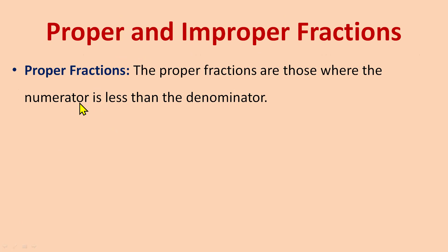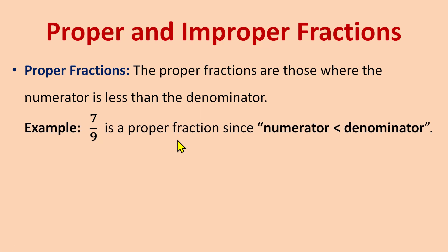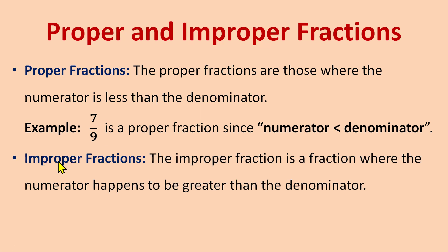Proper fractions are those where the numerator is less than the denominator. When the upper number is less than the denominator, we call it a proper fraction. For example, 7/9 — here 7 is the numerator and 9 is the denominator. Since 7 is less than 9, that is numerator is less than denominator, 7/9 is a proper fraction.